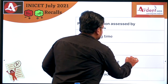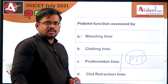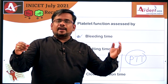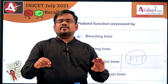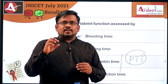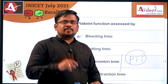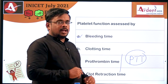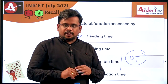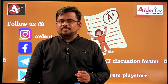Coming to PT and PTT — prothrombin time and partial thromboplastin time. The clotting process occurs via either the intrinsic or extrinsic pathway. Defects in the intrinsic pathway increase partial thromboplastin time (PTT), while defects in the extrinsic pathway increase prothrombin time (PT). This is what you have to know. Hope this session was very useful — we will meet in the next session with the next set of questions. Thank you, bye.